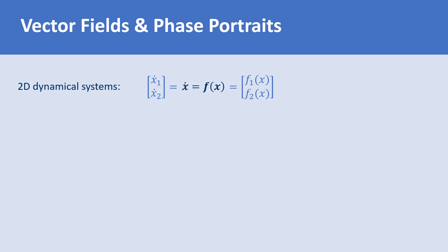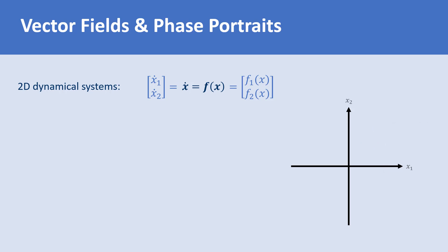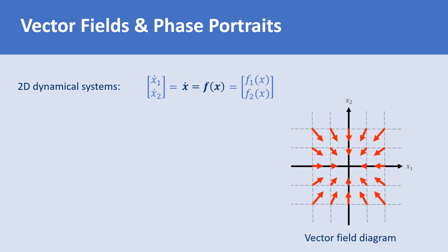We first explain what a vector field diagram is. For any given point x in the space, we can calculate the value of the vector f at x and draw an arrow originating from x that shows how x changes. If we repeat this for every point covering the grid, we obtain a vector field diagram for the dynamical system.